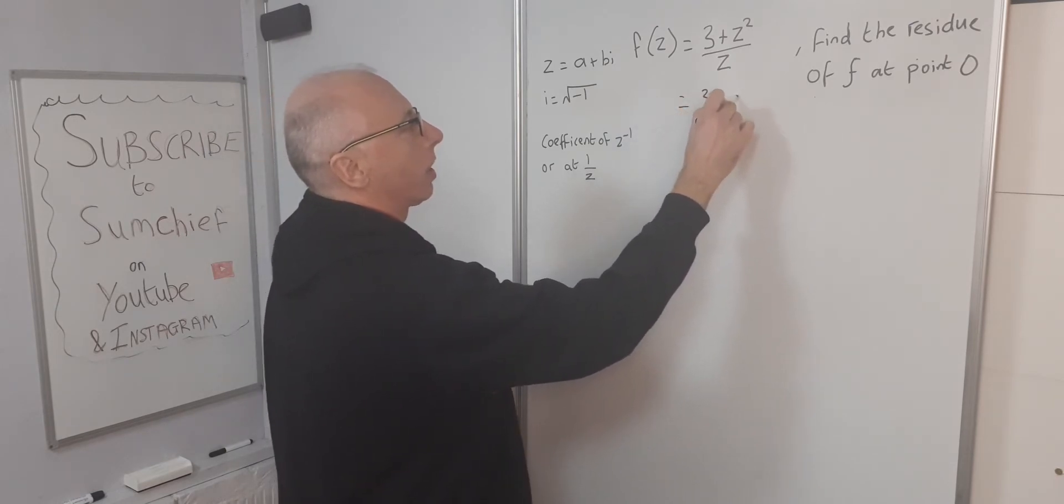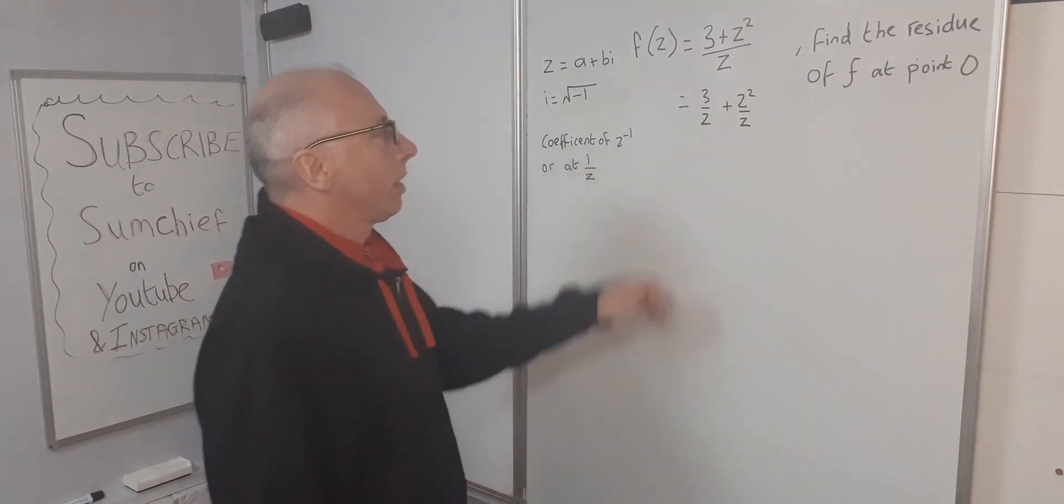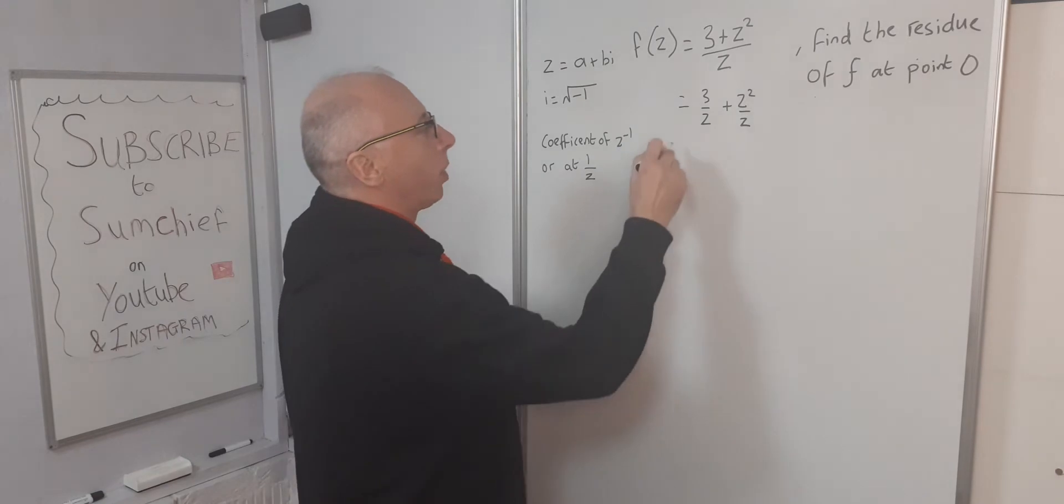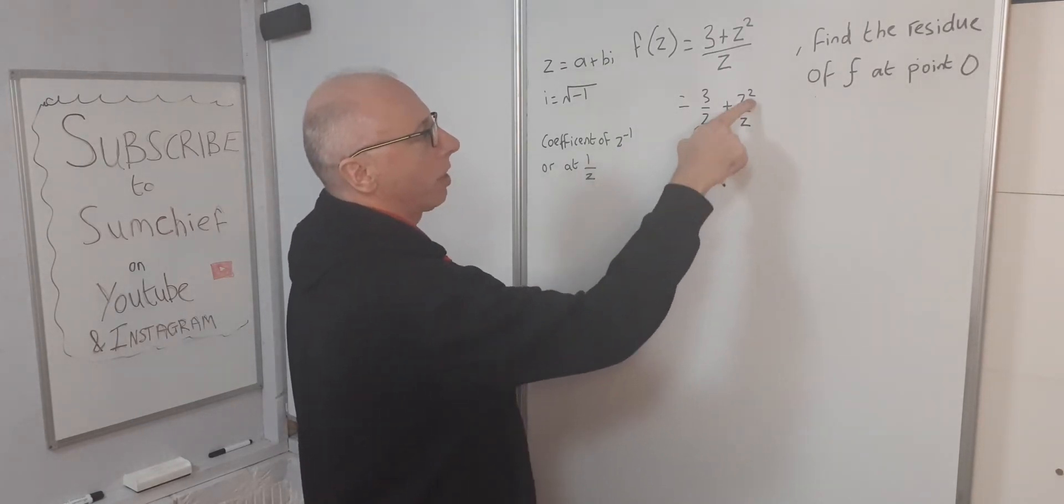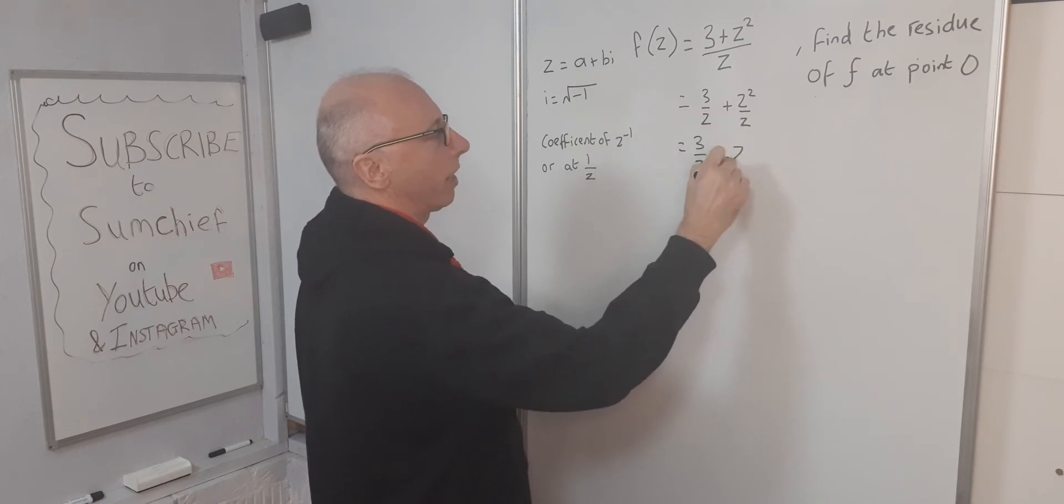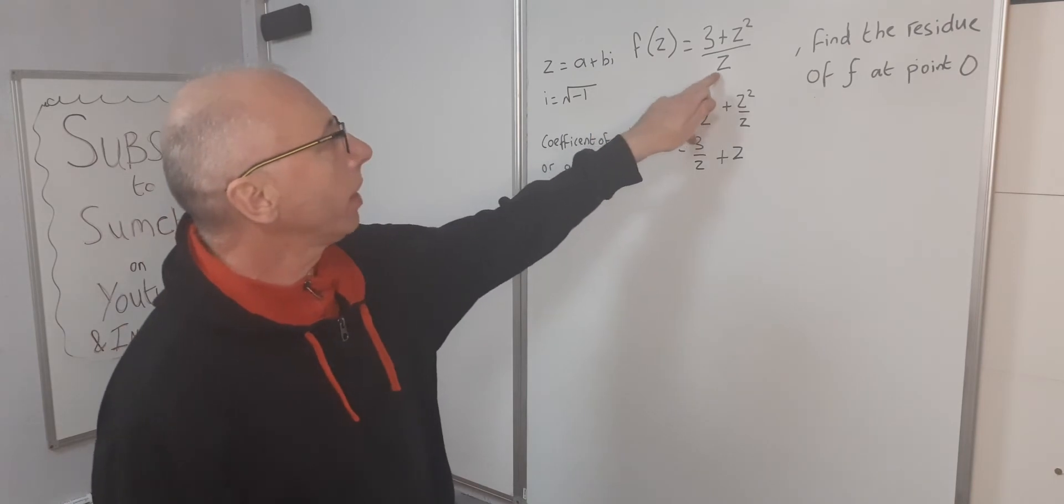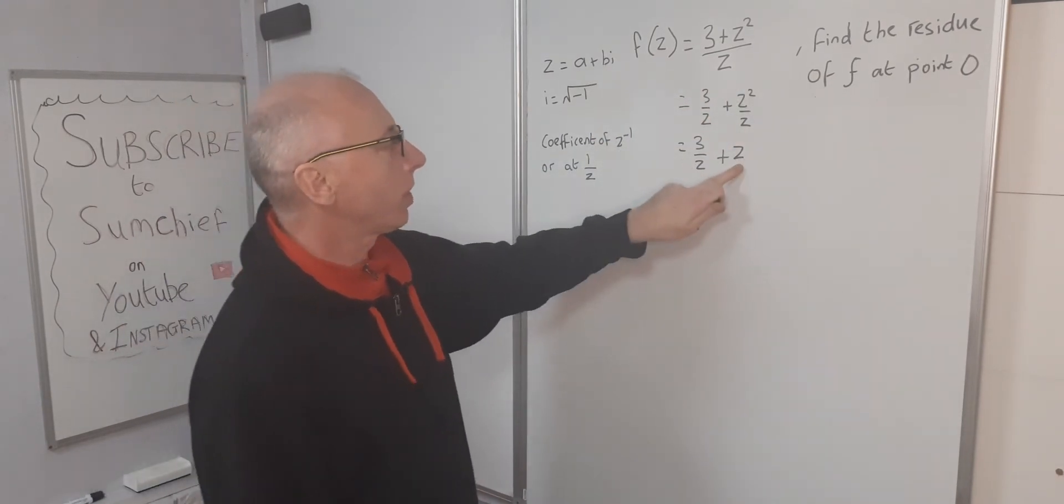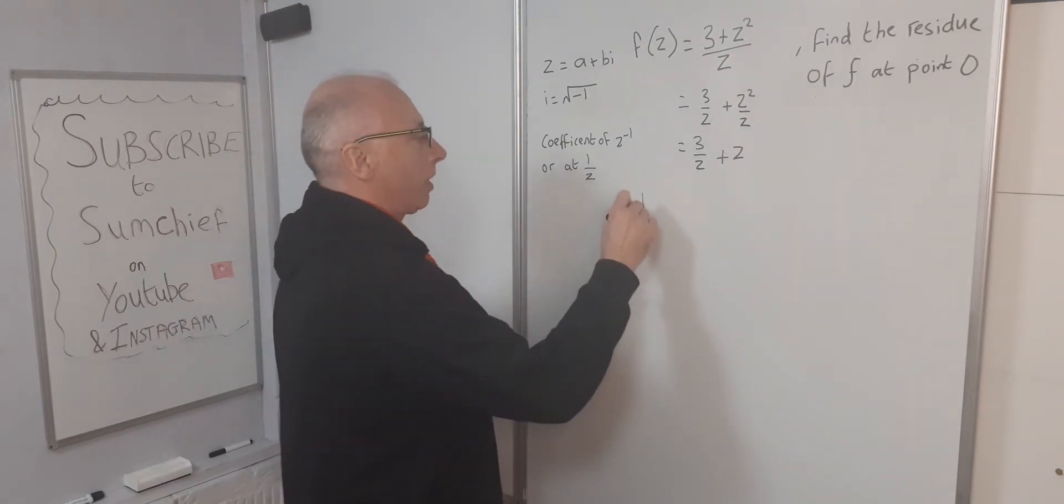Simplifying even more, we get 3/z + z²/z, which is just z. So the Laurent series of f(z), which we can now say is 3/z + z, we'll write as f(z) equals...